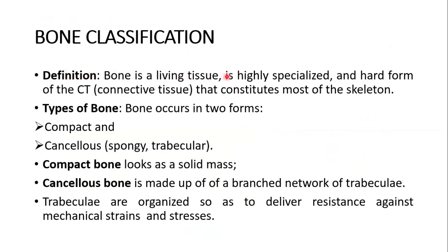Definition of a bone: it is a living tissue, highly specialized and a hard form of connective tissue that constitutes most of the skeleton. Bone occurs in two forms: compact and cancellous. Cancellous is also called spongy or trabecular bone. Compact bone looks like a solid mass, and cancellous bone is made up of a branched network of trabeculae. Trabeculae are organized to deliver resistance against mechanical strain and stress.